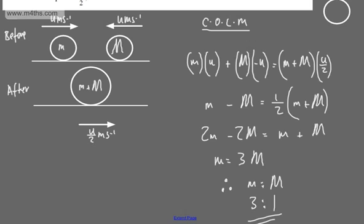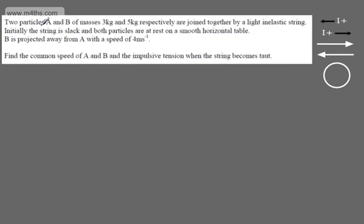Let's look at one more. Two particles A and B of masses 3 kg and 5 kg respectively are joined by a light, inextensible string. Initially the string is slack and both particles are at rest on a smooth horizontal table. B is projected away from A with a speed of 4 m/s. We're asked to find the common speed of A and B, and the impulsive tension when the string becomes taut.